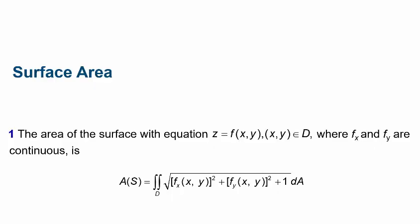The surface area of some equation — we have some equation z equal to a function of x and y, where x and y exist within a certain domain or region we're interested in, and where the partial derivatives with respect to x and y are both continuous. The surface area is a double integral over this region, equal to the square root of the partial derivative with respect to x squared, plus the partial derivative with respect to y squared, plus one, integrating over that region.